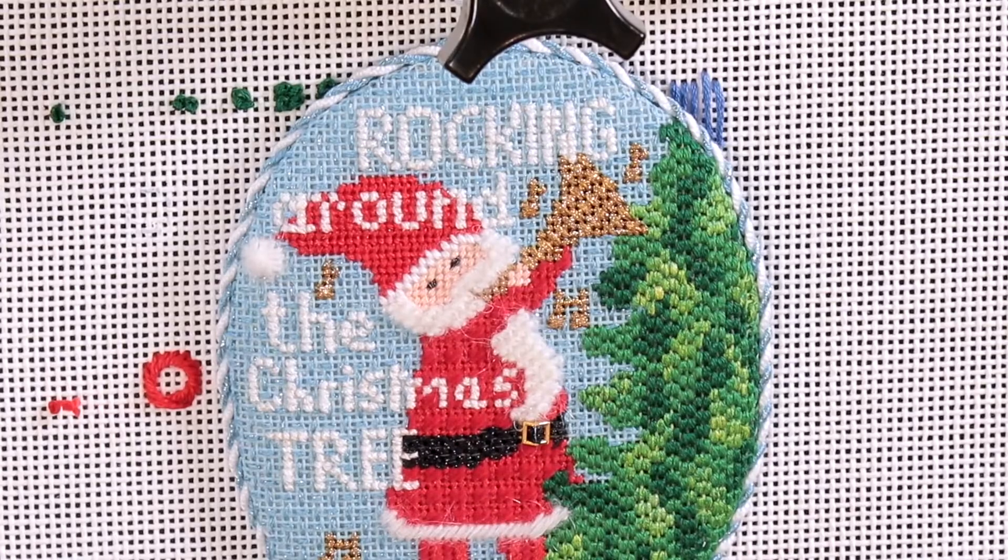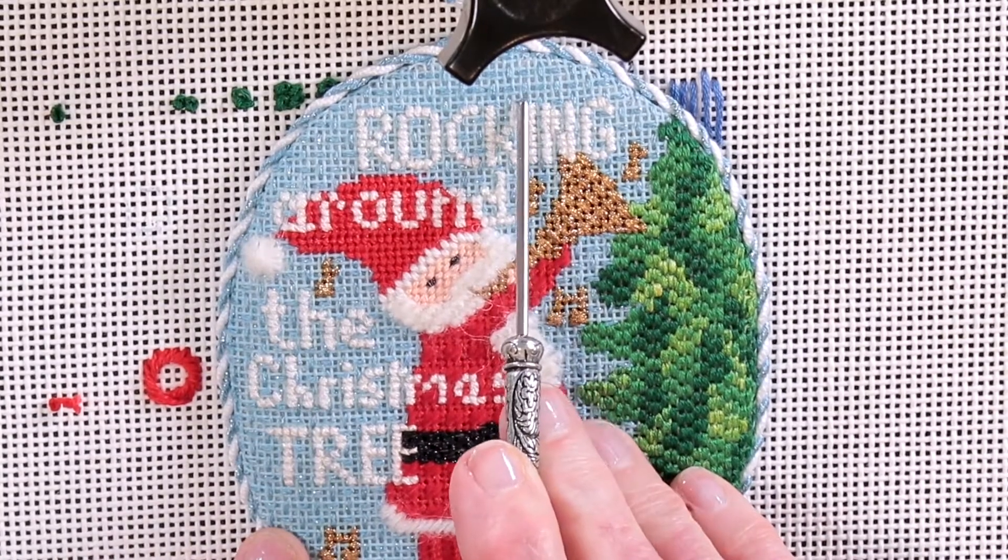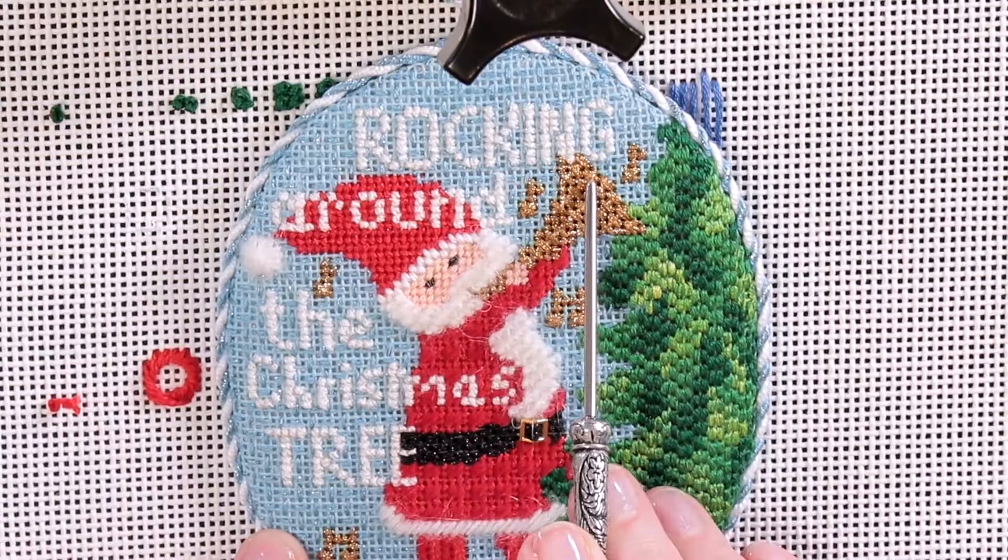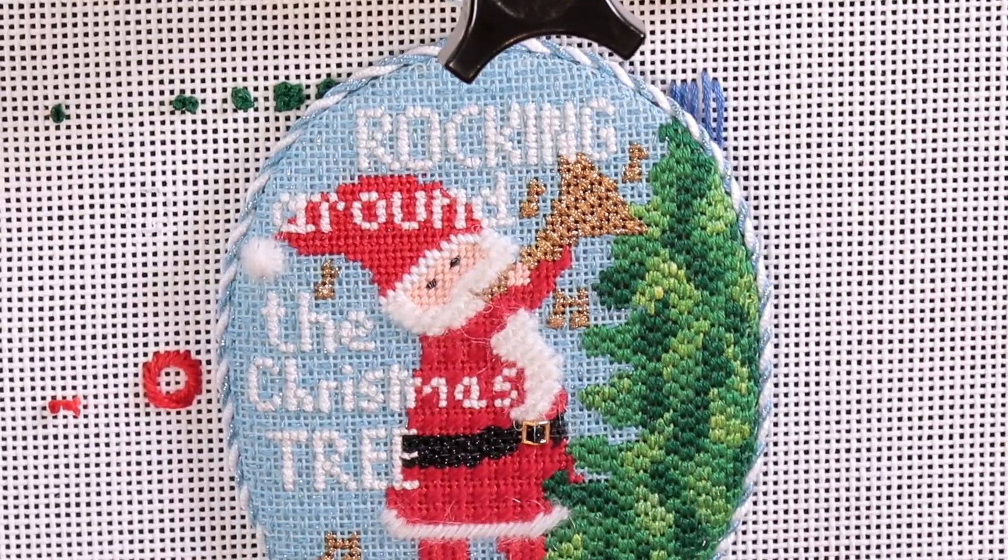So in this case you'll see that the background here is done with a sparkly thread, but you still see the canvas coming through. Again, half the work.